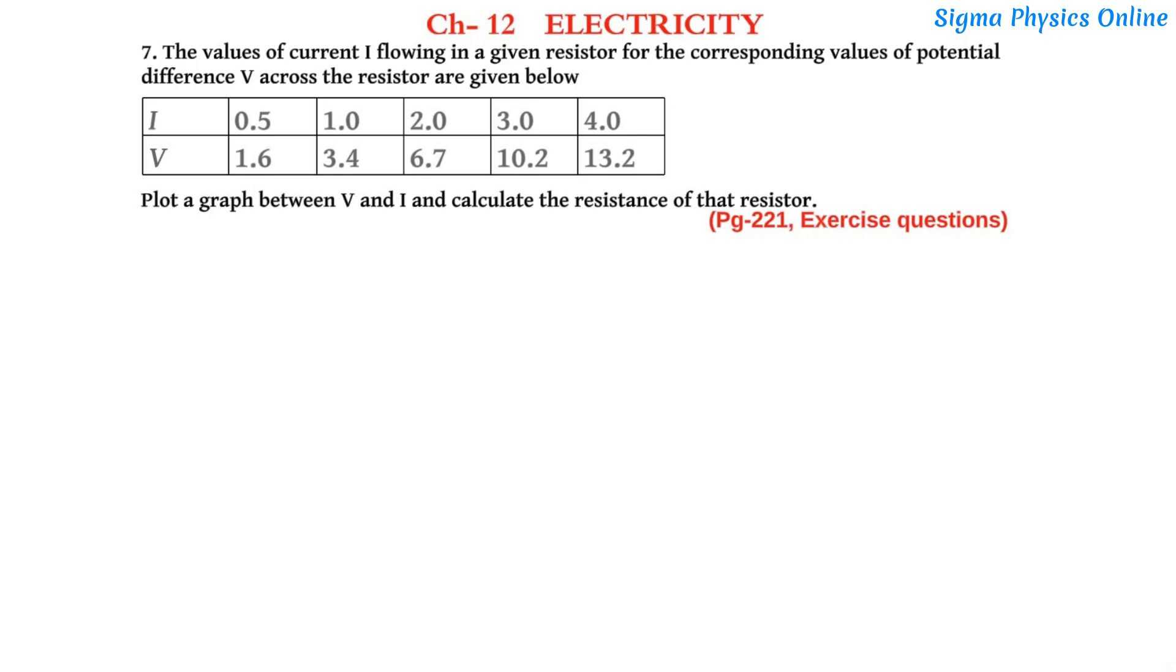Hello students, welcome back. Let's solve the exercise question number 7 of Chapter 12 Electricity from Class 10 NCERT Science textbook. The question reads: the value of current I flowing in the given resistor for the corresponding values of potential difference V across the resistor are given below. Plot a graph between V and I and calculate the resistance of that resistor.